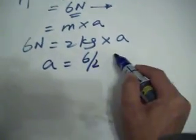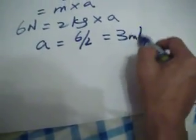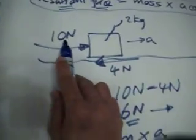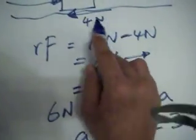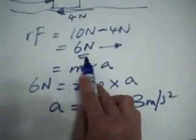Now what does that mean? That means that if someone pushes the box with 10 Newton, the friction is 4 Newton, the resultant force is 10 minus 4, 6 Newton, and it's 2 kilogram mass. Acceleration will be 3 meter per second squared.